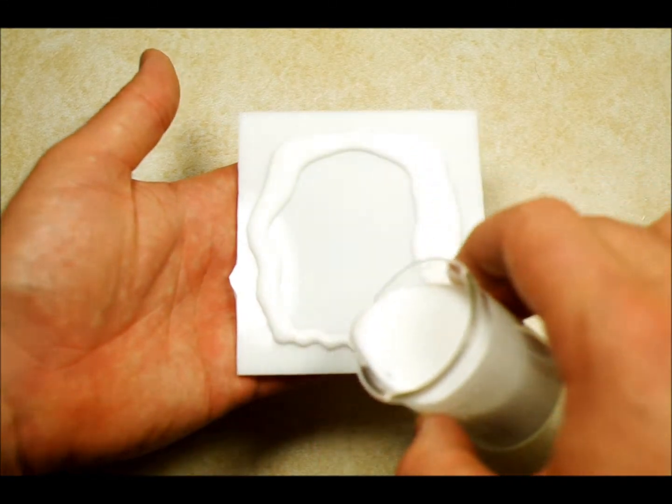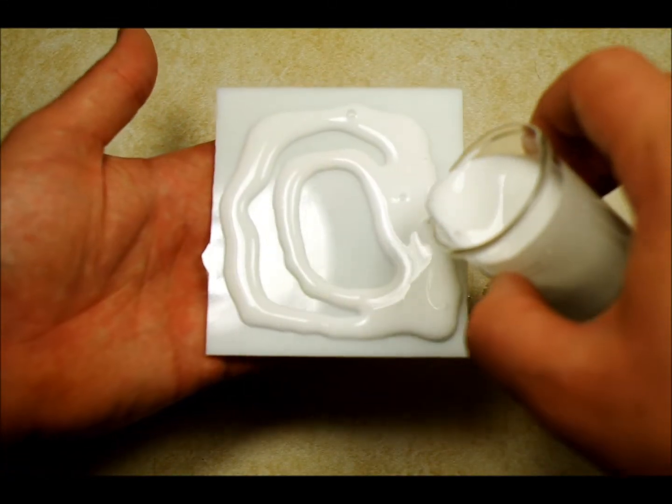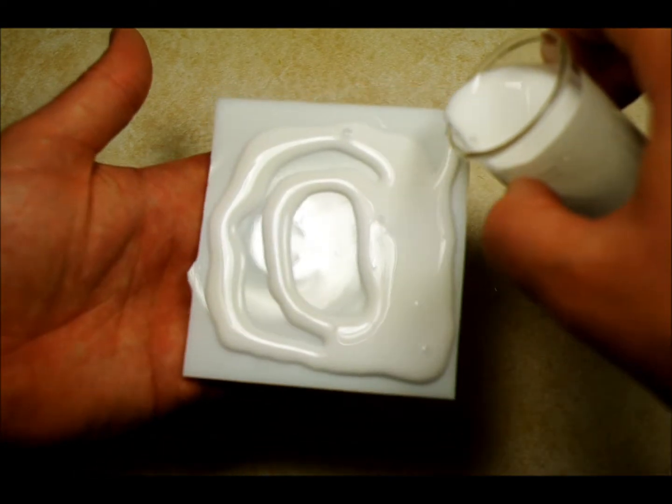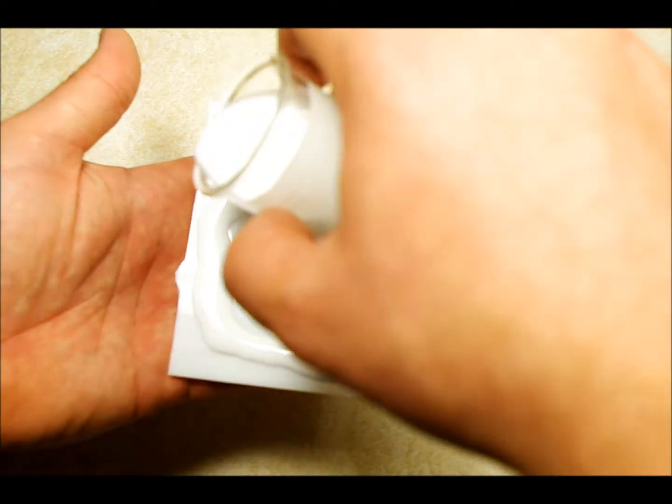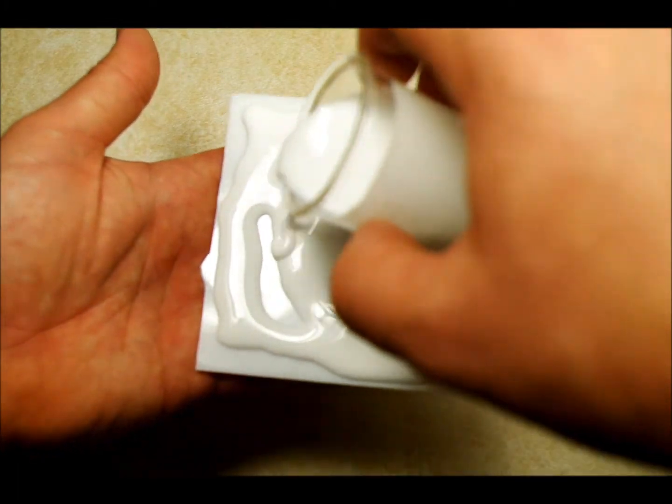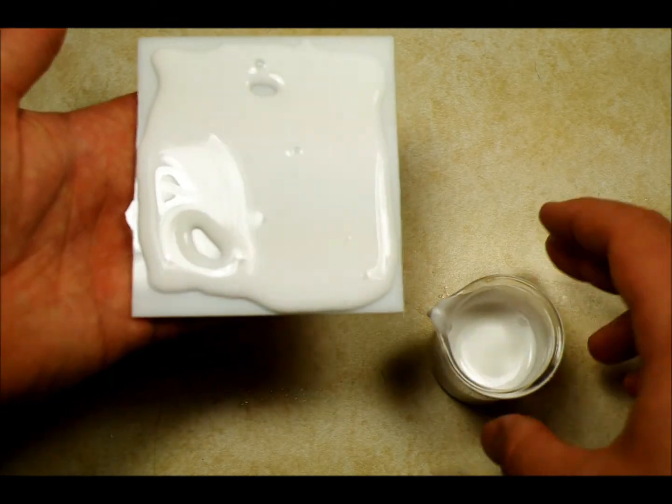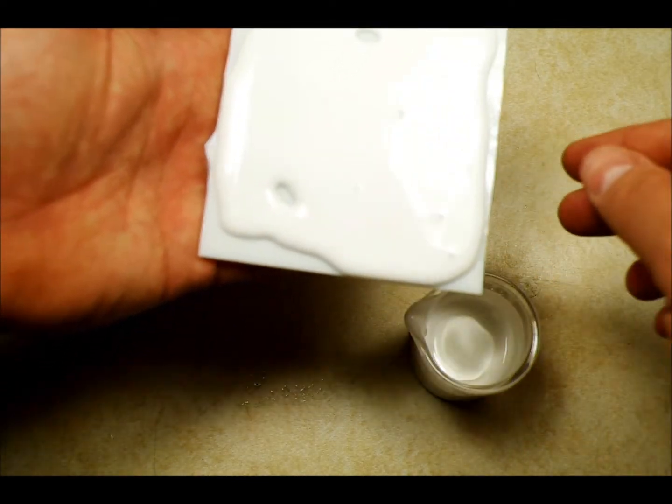You could also, as I think I mentioned in the first video, use a brush for this. The problem is that a brush will leave brush strokes and substantial air bubbles, whereas this method won't. You can see that there are air bubbles in there but they'll settle out as the emulsion cures and sets.